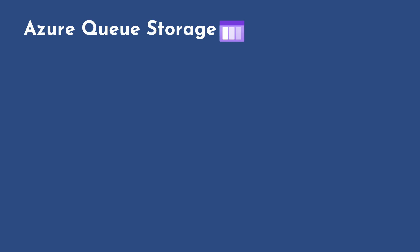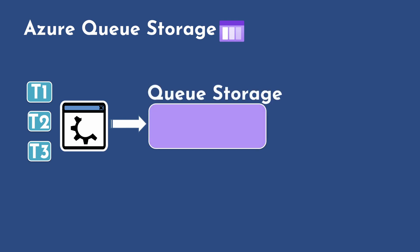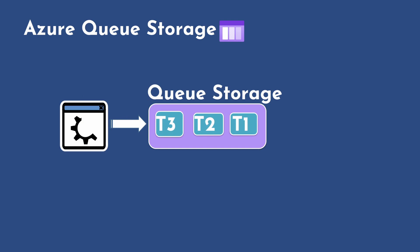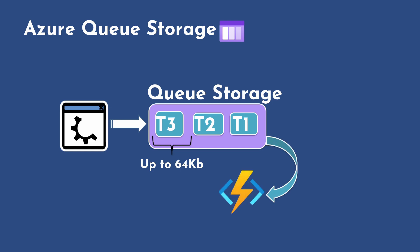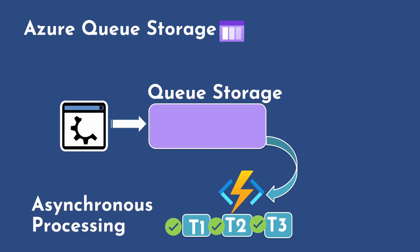Let's have a look at Azure queue storage. Suppose you have an application that performs a certain number of tasks — task 1, task 2, and task 3. These tasks are passed to Azure queue storage in the form of messages. The size of each message can go up to 64 KB. These messages are then transferred to an Azure service for further processing, such as an Azure function, which performs asynchronous processing on them. This is called asynchronous processing of messages, and this is how Azure queue storage works.